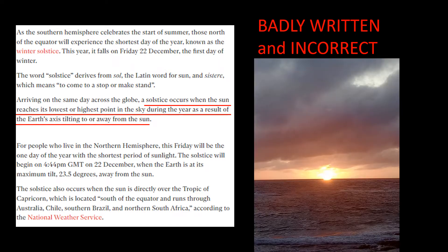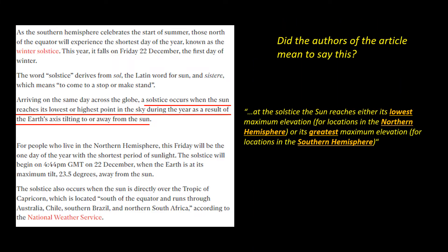The sun reaches its lowest elevation every single day of the year at sunrise and sunset. So perhaps the authors meant to say something like this: At the solstice, the sun reaches either its lowest maximum elevation for locations in the northern hemisphere or its greatest maximum elevation for locations in the southern hemisphere.